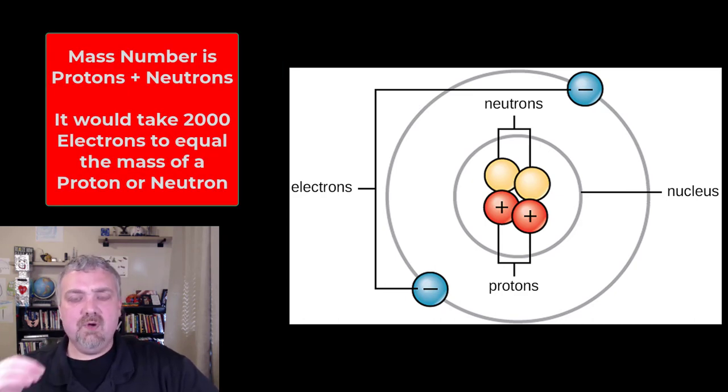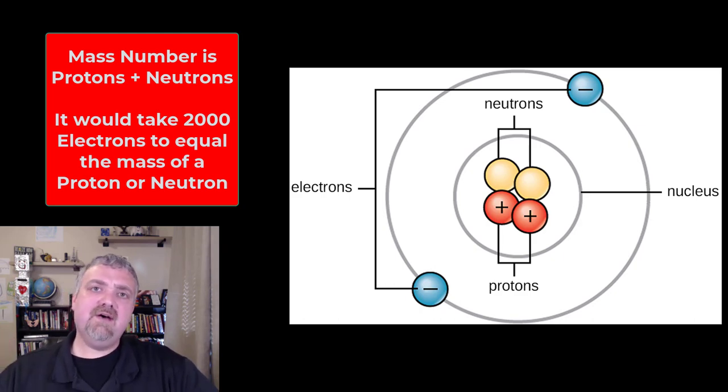As far as weight, protons and neutrons make up the mass of an atom. If you look at the mass number of an atom, it's the number of protons plus the number of neutrons. Electrons are so tiny, it takes about 2,000 electrons to equal the weight of one proton or neutron. So they're not counted in the weight.